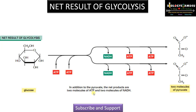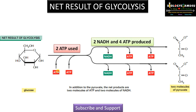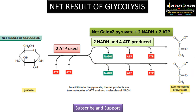The net result of glycolysis: in the preparatory phase, 2 ATP is utilized. In the payoff phase, 2 NADH and 4 ATP are formed, as glyceraldehyde-3-phosphate runs twice to form 2 pyruvate molecules. The net gain of the reaction is 2 pyruvate, 2 NADH, and 2 ATP — since 2 ATP is used out of the 4 produced, the net gain is 2 ATP.